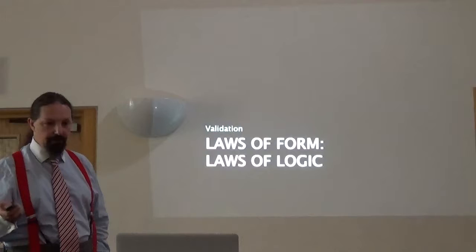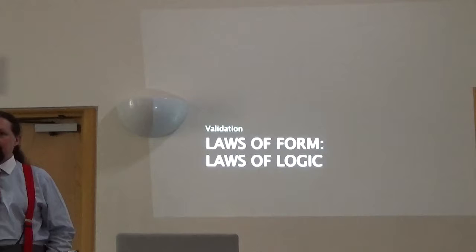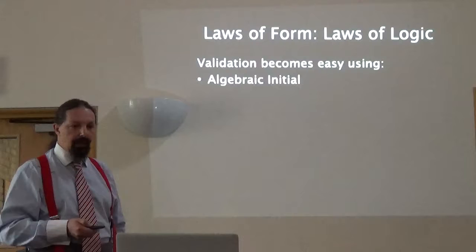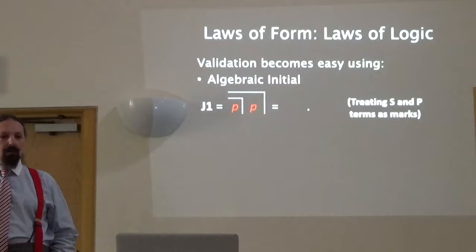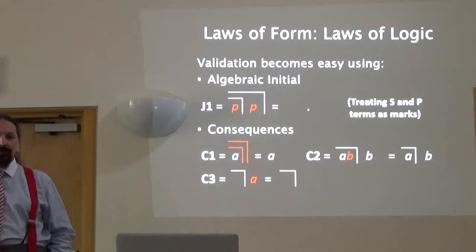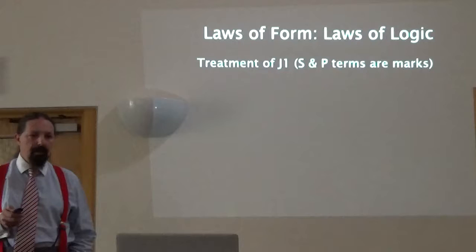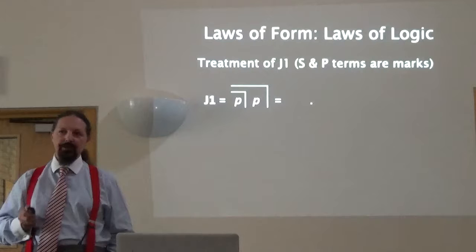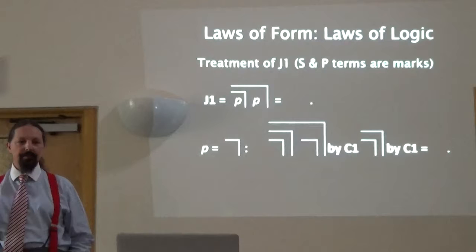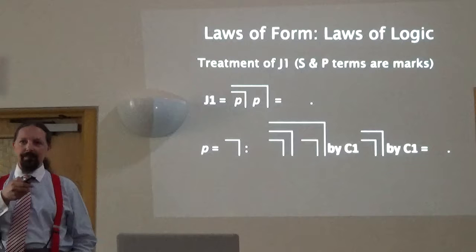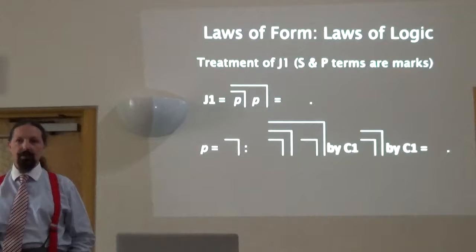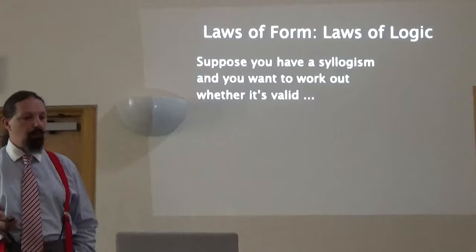If you know the rules but want to double-check, or if you don't know the rules, there is a way of validating. It becomes easy if we use J1 — which is equivalent to the blank space — and three of the consequences: C1, C2, and C3. Why does J1 work? Because we're treating both variables as marks. If we substitute the mark for each of these P's, that leads to a mark over mark for the first — that can be eliminated — reducing to a mark over mark — that can be eliminated — and the whole expression reduces to the blank space.